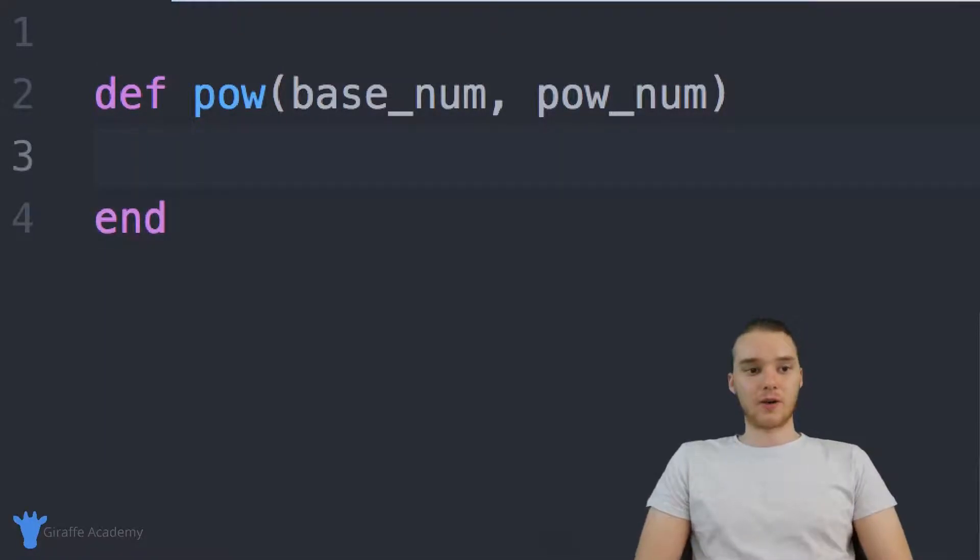Now, inside of here, we need to figure out how can we actually do this? How can we take the base number to the power number? And my solution would be to use a for loop. The first thing I'm going to do actually is create a variable. So I'm just going to call this result and I'm going to set this equal to one.